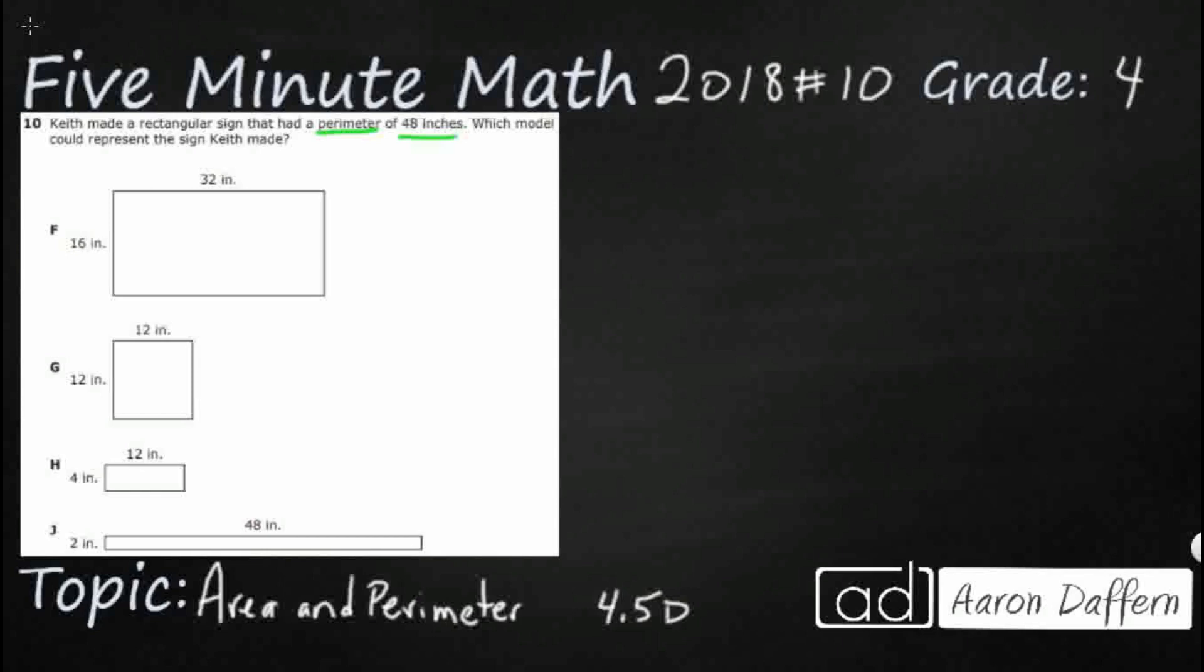Well we need to know that perimeter is the outside. Think of that word rim that sits inside perimeter. It always makes me think of like a basketball rim and you've got the net hanging down but the rim is that metal piece and it goes around the outside. Area is the inside. We're not really looking for that. We're looking for the rim, the perimeter that goes around the outside.